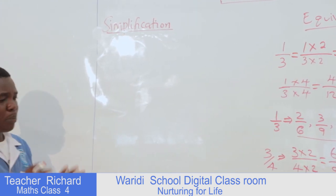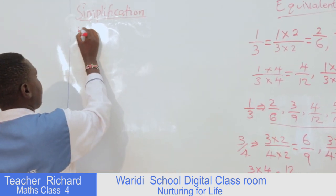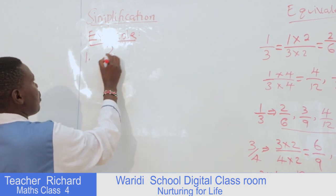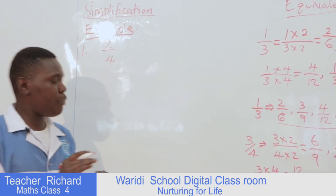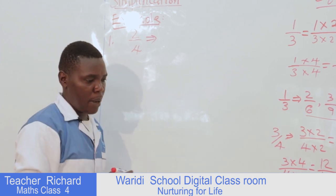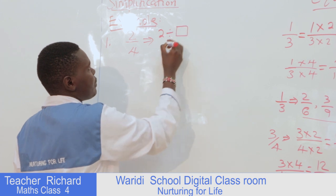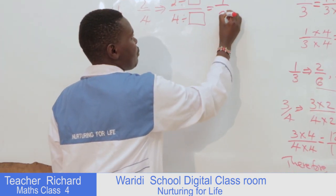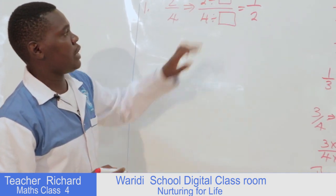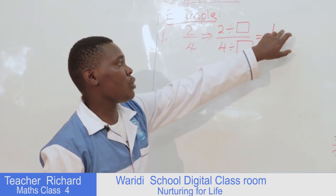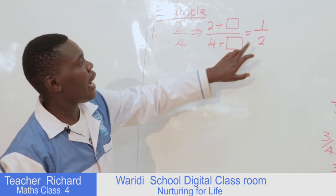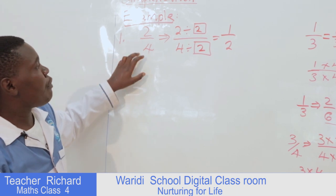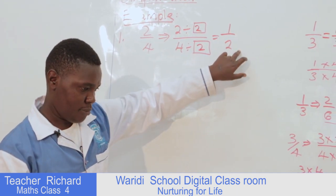When we talk of simplification, we want to simplify a fraction to its simplest form. Example one: we have two over four. I want to simplify this to get the simple form of two over four. I'm going to take two divided by a number over four divided by the same number. So when I divide two by that number I get one, and when I divide four by that same number I get two. That number is two. So two over four in simplified form is one over two.